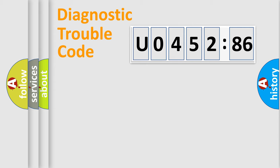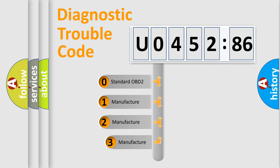Powertrain, Body, Chassis, Network. This distribution is defined in the first character code.